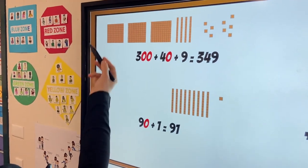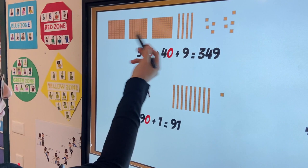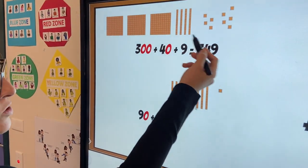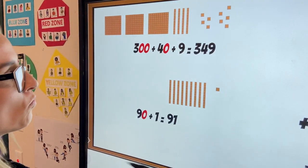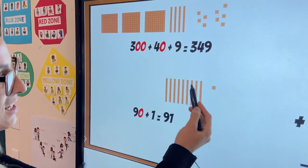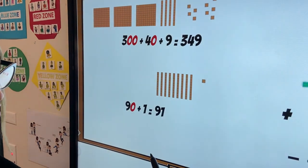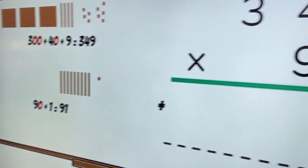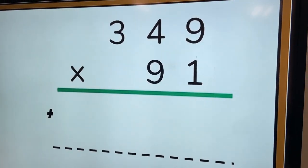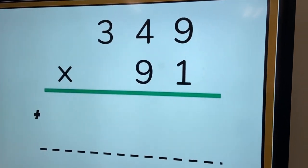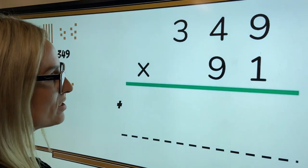So here we have 300, so three hundreds, we've got 40, so four tens and nine ones. It's asking us to multiply that 90 and one times. So the written algorithm is just a structure for us to be able to do this in a step-by-step process.